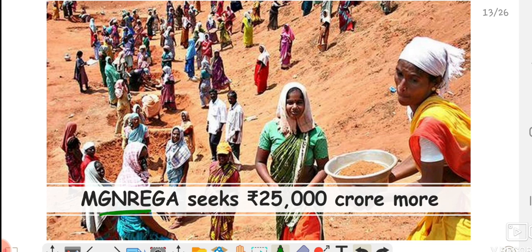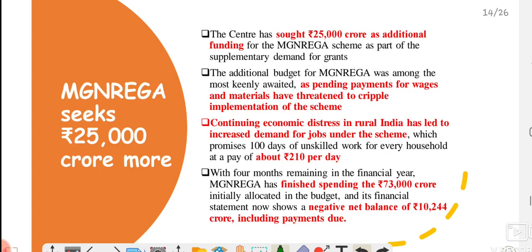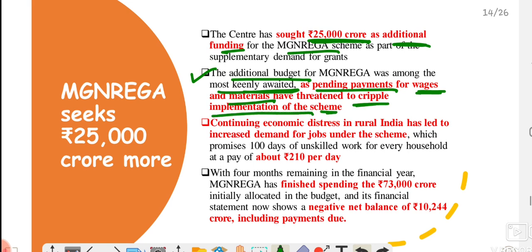The next topic: the Central Government has recently asked for an additional ₹25,000 crore in additional funding, saying that all the money allocated for MGNREGA has been exhausted. This additional budget for MGNREGA was among the most keenly awaited, because many payments are pending — wages need to be provided to many people, and the Indian government has already procured materials for which payment has not yet been made. This is causing problems in the scheme's implementation.